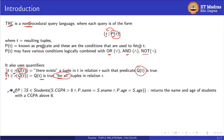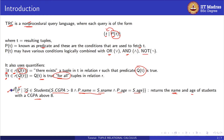Now let us take an example of how to read the TRC query. For a tuple p, there exists s belonging to student such that s dot cgpa greater than 8, and p dot name equals s dot name, and p dot h equals s dot h. This is our required condition — s belongs to student, so from the students table, cgpa is a column name. We have to find out the name and age of students with cgpa above 8. So we specify p dot name equals s dot name and p dot h equals s dot h — whatever we have to find out, we have to specify like this.